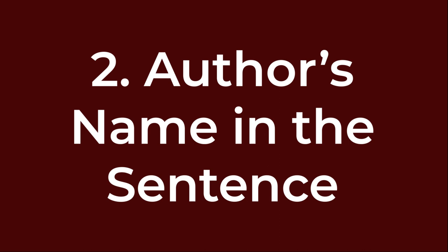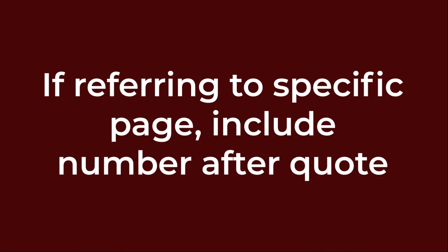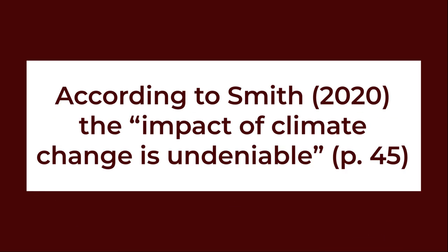Number two: author's name in the sentence. If the author's name is mentioned in your sentence, this is called a signal phrase. When you use a signal phrase, you only need to include the publication date in parentheses after you mention the author's name. If you are referencing a specific page, include that after the quote. For example: According to Smith (2020), the impact of climate change is undeniable (p. 45).